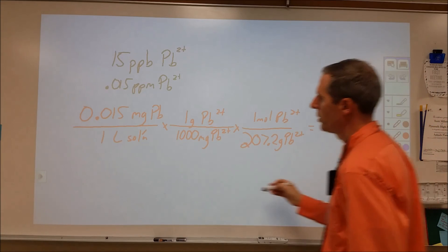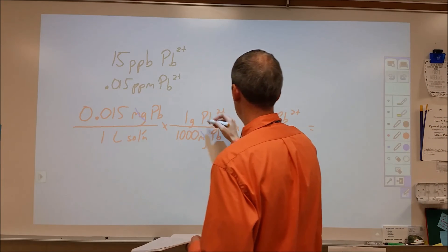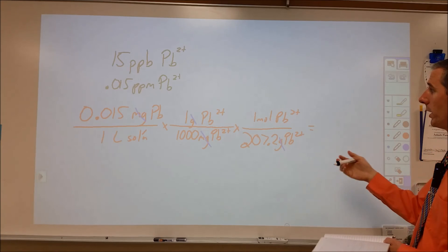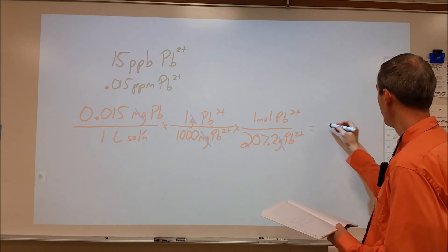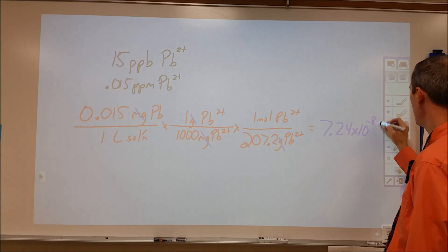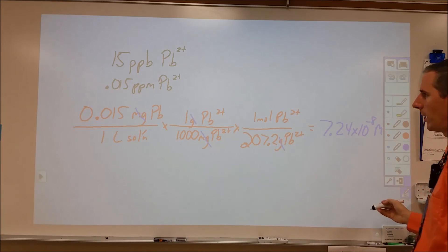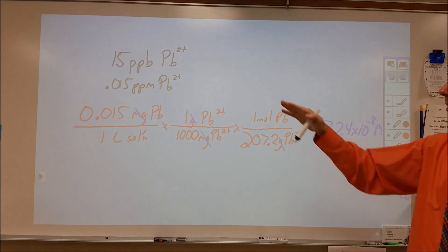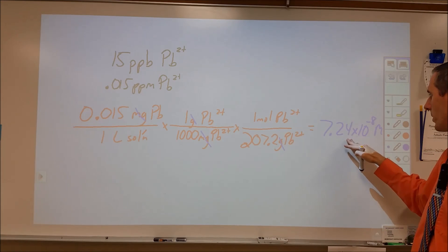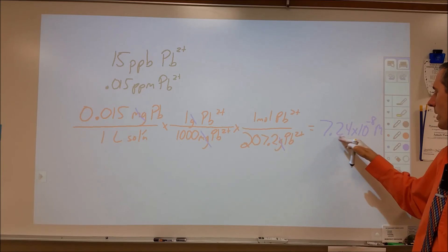We set up a situation where we're going to cancel milligrams, grams, grams up to moles. I'm going to end up with moles per liter, and the answer came out for me to be 7.24 times 10 to the negative eighth molar as our lead concentration. So 0.015 parts per million translates to 0.00000000724 molar.